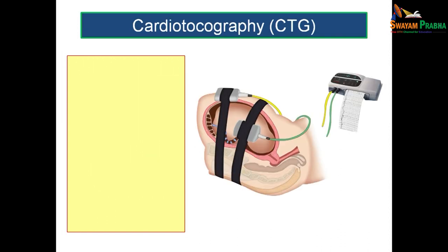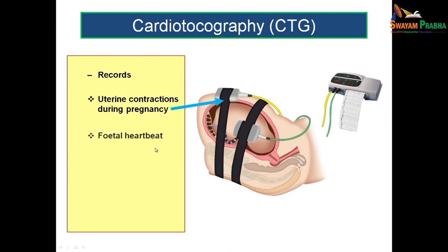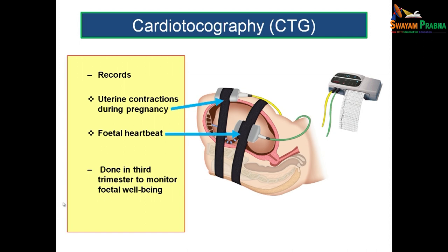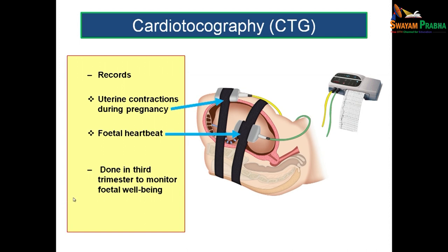Cardiotocography (CTG) records uterine contractions during pregnancy. Two probes are placed on the mother's abdomen — one to detect uterine contractions and another to detect the fetal heartbeat. The CTG machine records both uterine contractions and fetal heart sounds. This is usually done in the third trimester to monitor fetal well-being.